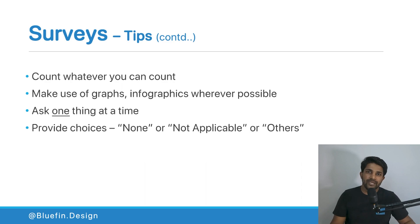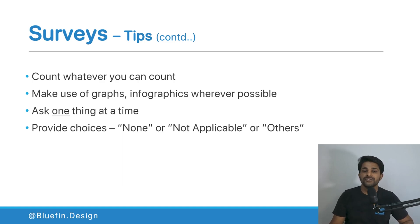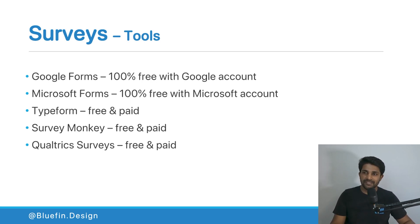For multiple choice or radio button questions, provide choices like 'None,' 'Not applicable,' or 'Other,' so users can still respond if the given options don't apply to them. There may be instances where your provided options don't cover all users, and these extra choices help you identify when you've missed something in your options.